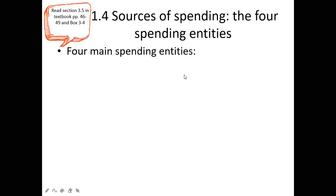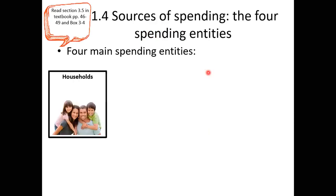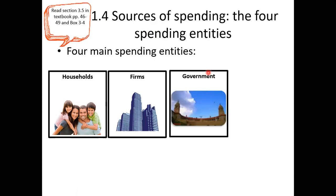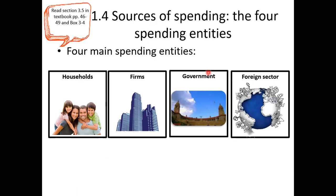We have four sources of expenditure. The first is households, the second is firms, the third is government, and the fourth is the foreign sector. These are the four sources of expenditure. Households are just consumers; firms are corporates and the like; we have the government; and we also have the foreign sector.